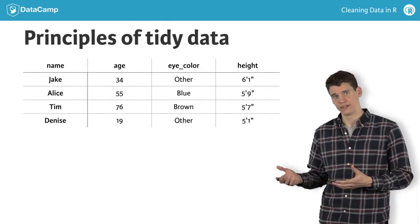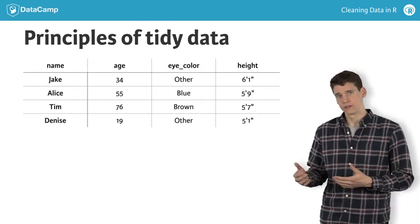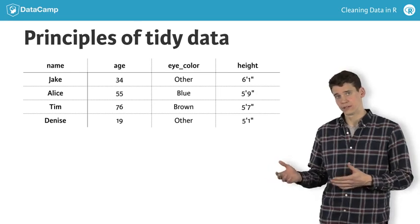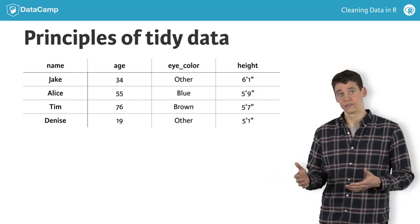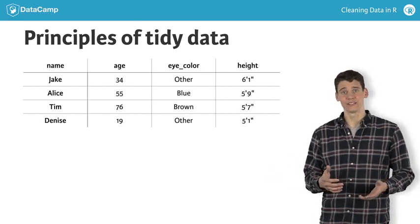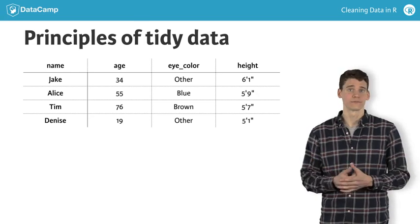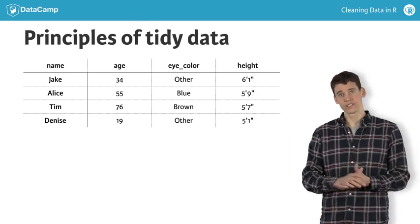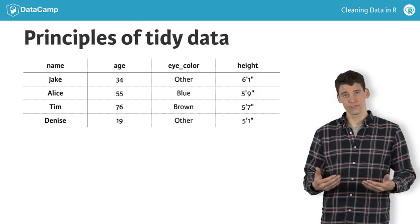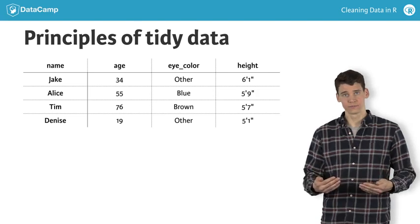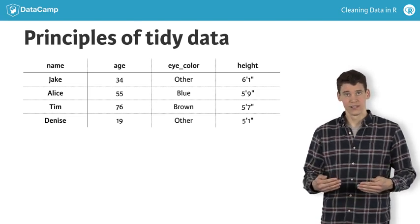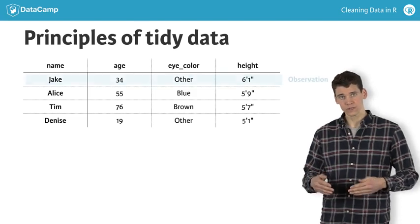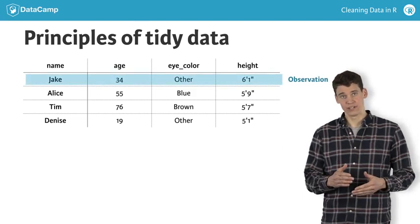Here's an example of tidy data. For each of four people we have a name, age, eye color, and height in feet and inches. Looking across the first row we see that Jake is 34 years old, has hazel eyes, and is 6 feet 1 inch tall. This row is called an observation.